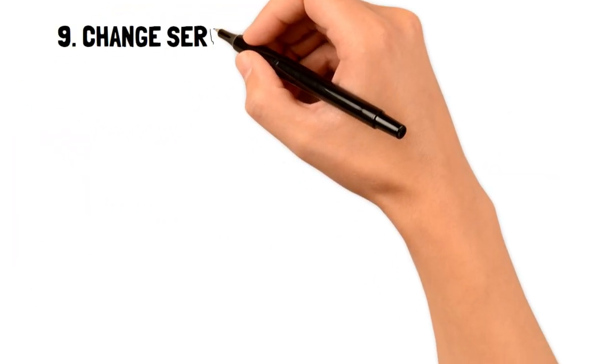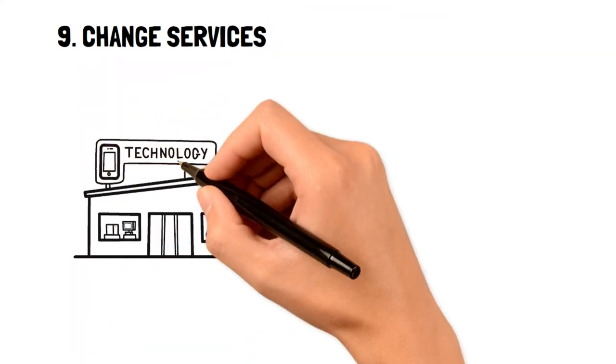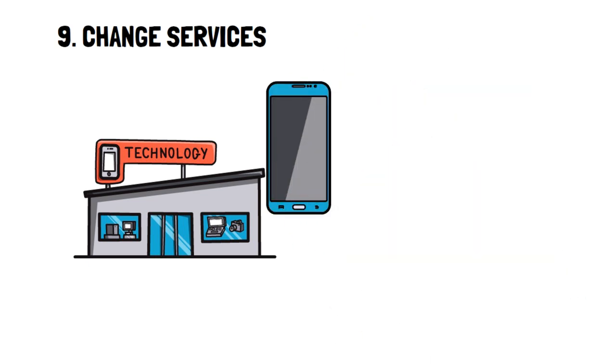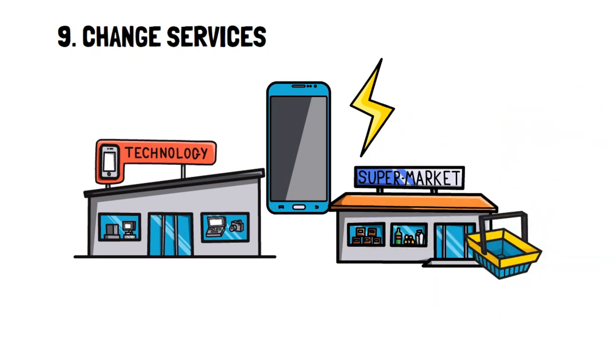9. Change services. It's normal to be tied to a bunch of services that require payments. For example, your cell phone provider, utility provider, electricity provider, internet provider, etc.